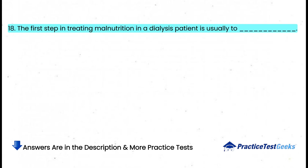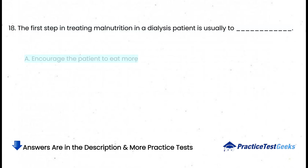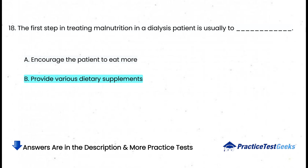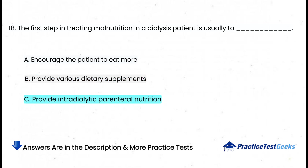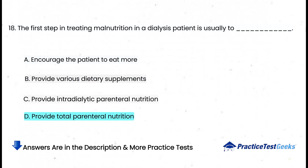The first step in treating malnutrition in a dialysis patient is usually to: a. Encourage the patient to eat more, b. Provide various dietary supplements, c. Provide intradialytic parenteral nutrition, d. Provide total parenteral nutrition.